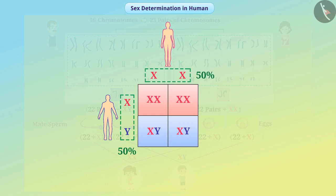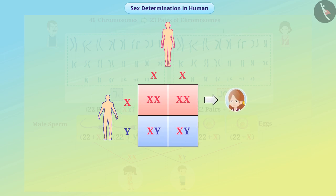All children get an X chromosome from the mother, so their sex determination depends on the chromosome obtained from the father. If the child inherits the X chromosome from the father, then it will be a girl, and if the child inherits the Y chromosome from the father, then the child will be a boy. This happens completely at random, so it is wrong to hold the father or mother responsible for not having an infant of any particular gender.